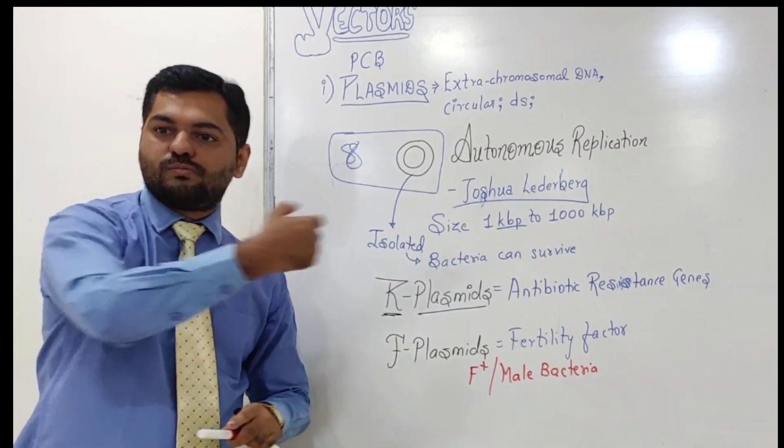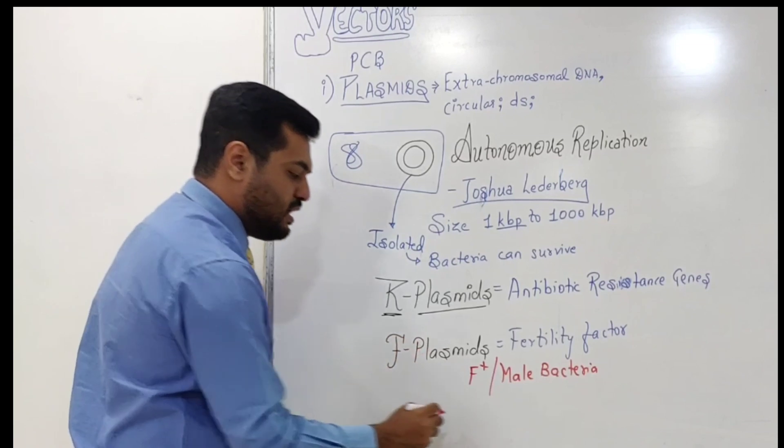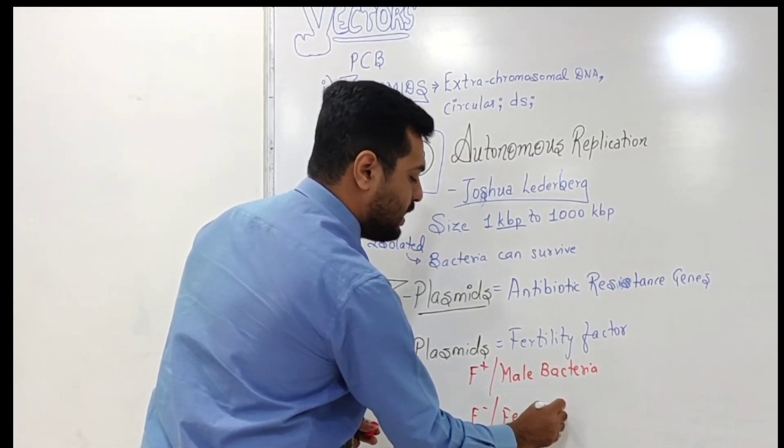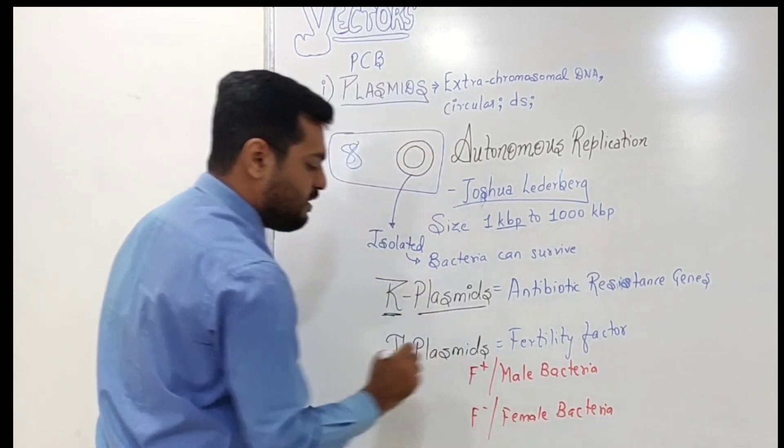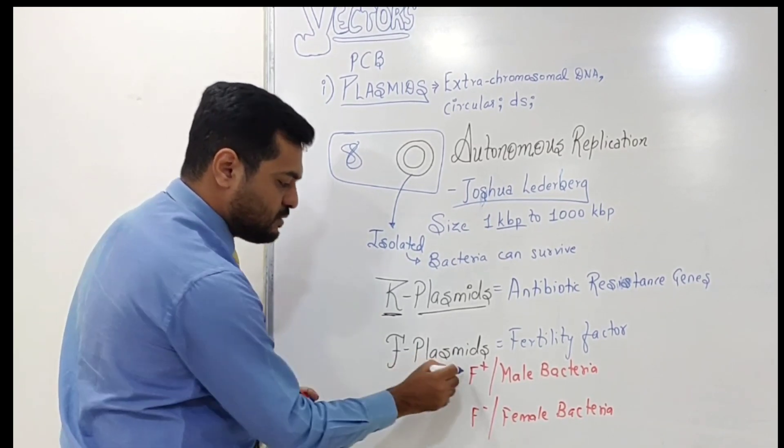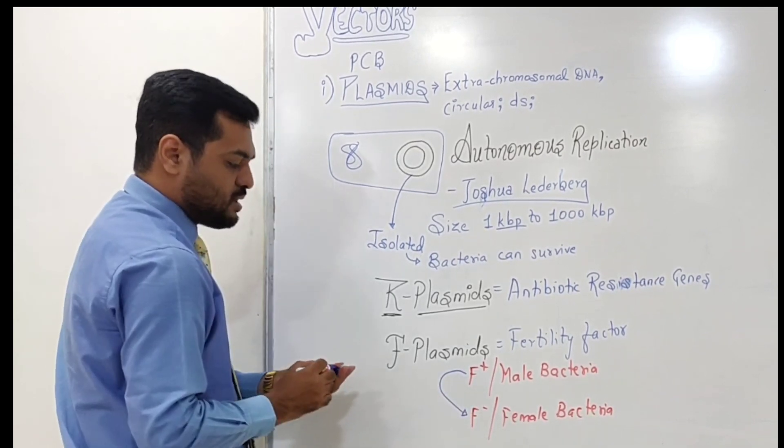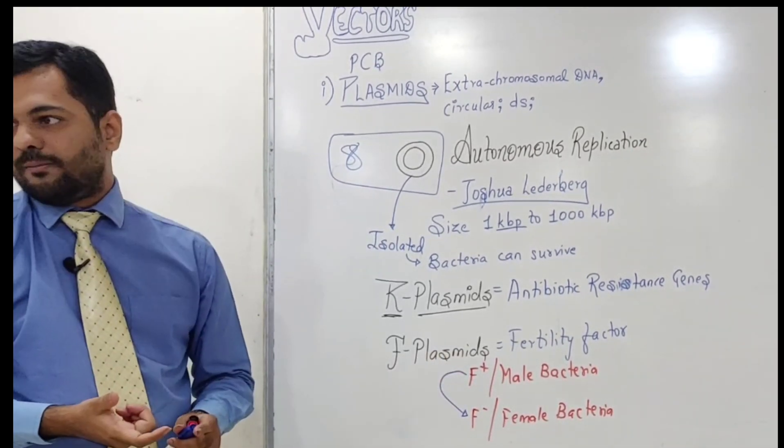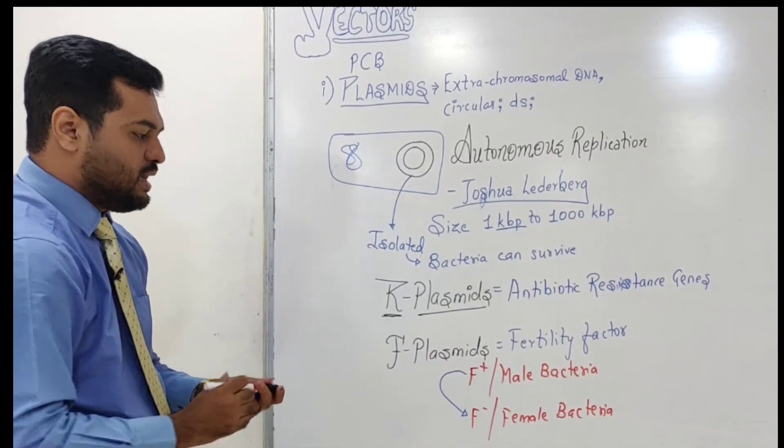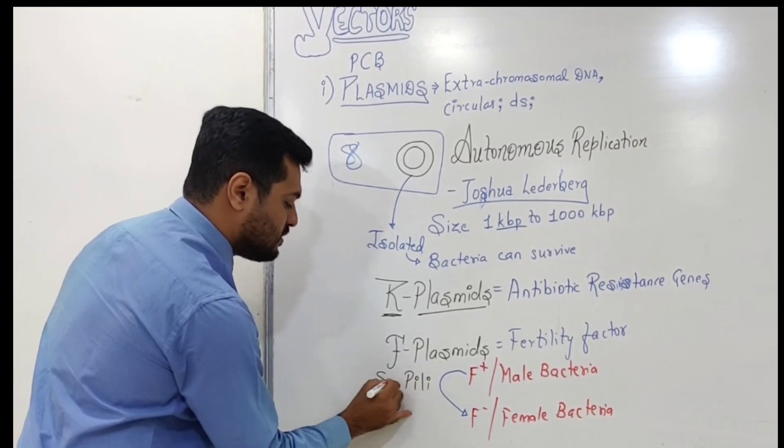Female bacteria or F minus bacteria lack the F plasmid. The F plus plasmid will produce a copy and transfer it to F minus, converting it to F plus. This process uses a particular structure called pili or sex pili.